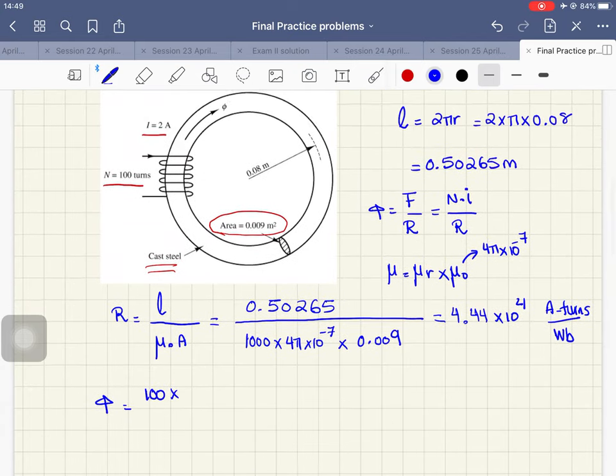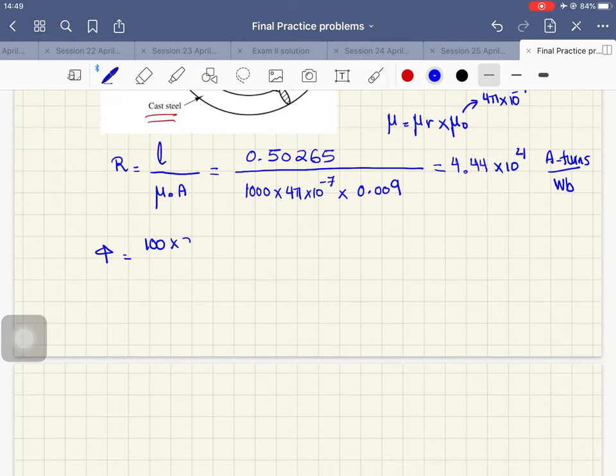So phi is equal to N, which is 100 multiplied by the current that we're using, 2 amps, over the reluctance. And the reluctance is 4.44 multiplied by 10 to the 4. And that is giving us 0.0045 Weber. So this is the magnetic flux.